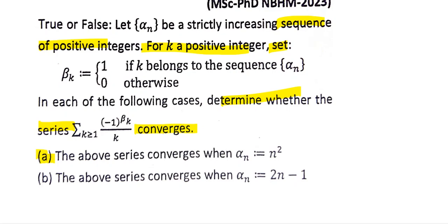So let's start with the first statement. This statement is when alpha n defines equals to n squared.